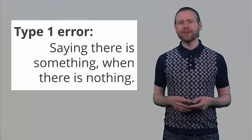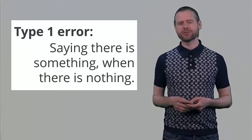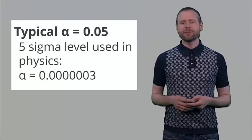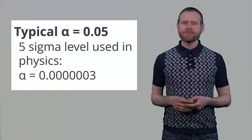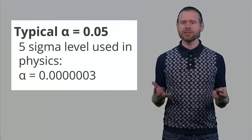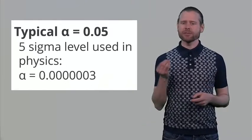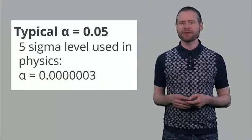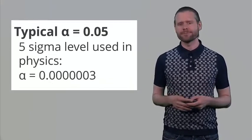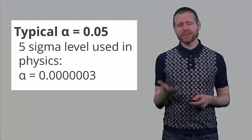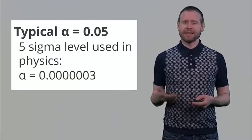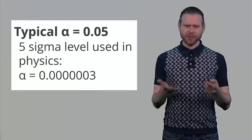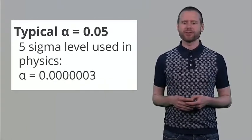You are concluding that there is a true effect when the null hypothesis is actually true. Typically we set an alpha level at 0.05, which means that in 5% of studies we do in the long run where the null hypothesis is true, we will say that there is an effect but we will be wrong. This is a choice — you can set the alpha level at any level you want. In physics it is very typical to use the 5-sigma level, which is a very low alpha value.